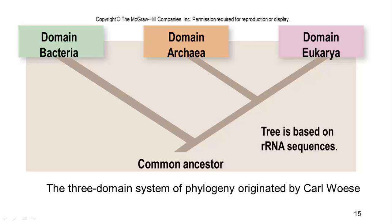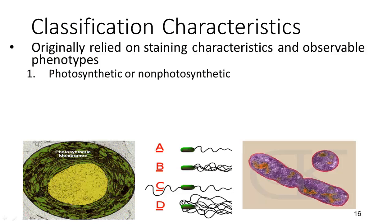We talked about the phylogeny of life using the three domains. There is evidence that archaea and eukaryotes are actually more closely related to each other than archaea and bacteria are, but morphologically it's easier to lump archaea and bacteria together — making their grouping either paraphyletic or polyphyletic.